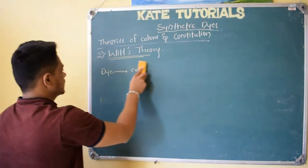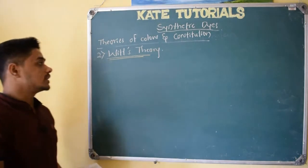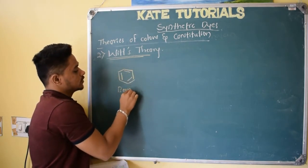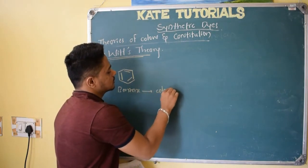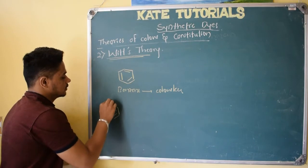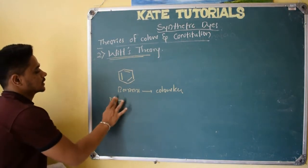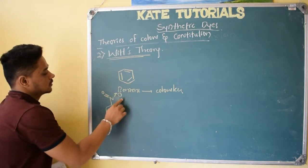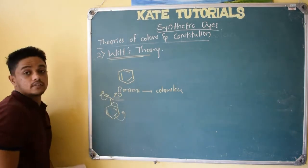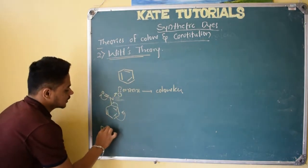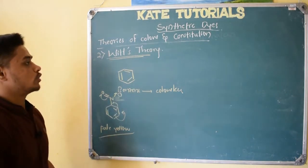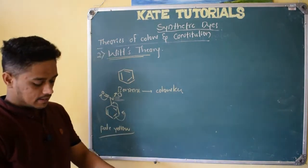Let us see how chromophores impart color to dyes. This is benzene — it is colorless. If I add a chromophore like NO2, the structure becomes nitrobenzene. What happens? Resonance occurs here. Because of this resonance, nitrobenzene becomes pale yellow color. Initially benzene is colorless, but when I added this chromophore, it became pale yellow. Why does this happen? I have to explain the chemistry behind it.